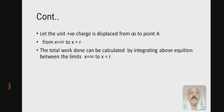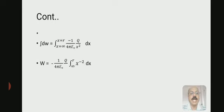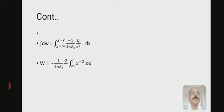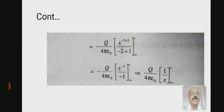The integration of dW from x = ∞ to x = r gives: W = −(q / 4πε₀) × ∫[∞ to r] x⁻² dx. Taking the constant term outside the integration: W = −(1 / 4πε₀) × q × ∫[∞ to r] x⁻² dx. Applying the integration formula, x⁻² integrates to x⁻¹/(−1).